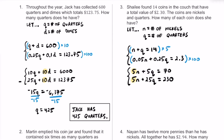The coefficients of N both equal 5, so we eliminate by subtraction. 5N minus 5N cancels out. 5Q minus 25Q gives negative 20Q. On the right side, 70 minus 230 gives negative 160. Dividing both sides by negative 20, we find Q equals 8 — that's the number of quarters.